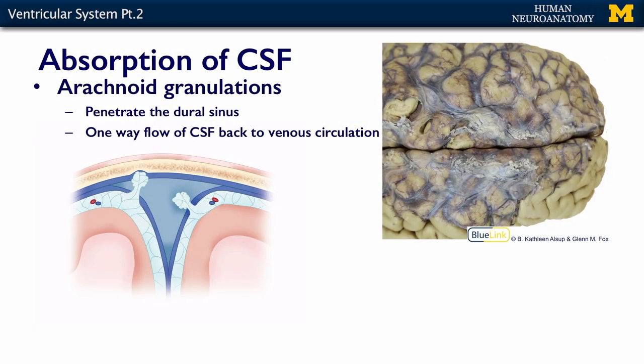Once CSF is in the subarachnoid space, it gets resorbed via the arachnoid granulations pushing into the dural sinus on the venous side of circulation. Interestingly, the choroid plexus and the arachnoid granulations don't communicate with one another, so you get a constant creation of CSF by the choroid plexus and a constant absorption by the arachnoid granulations. Usually this is in balance and everything is fine.